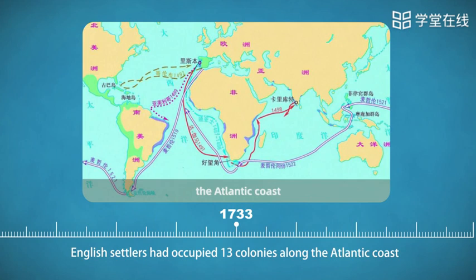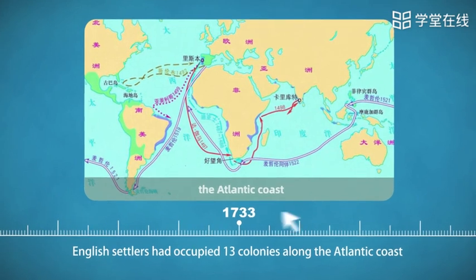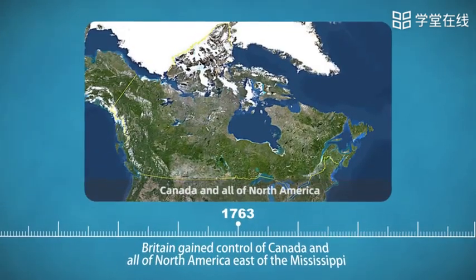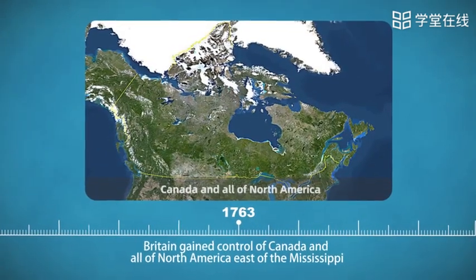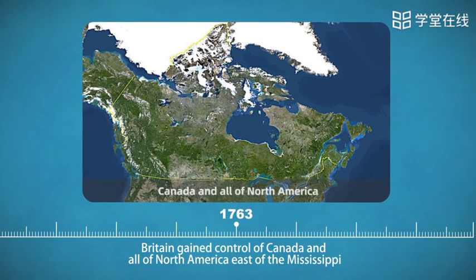Elsewhere in North America, the French controlled Canada and Louisiana. After the Seven Years' War, Britain gained control of Canada and all of Northern America east of the Mississippi in 1763.